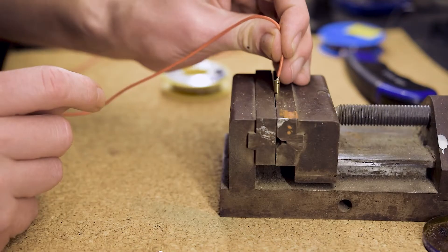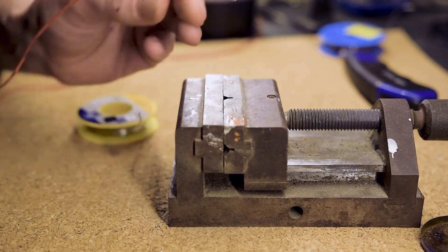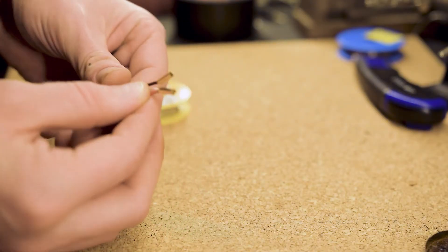When this is done, we solder our copper wire to the bullet connectors. One for the plus, one for the minus. These cables will later be soldered to the power outs of the BMS.